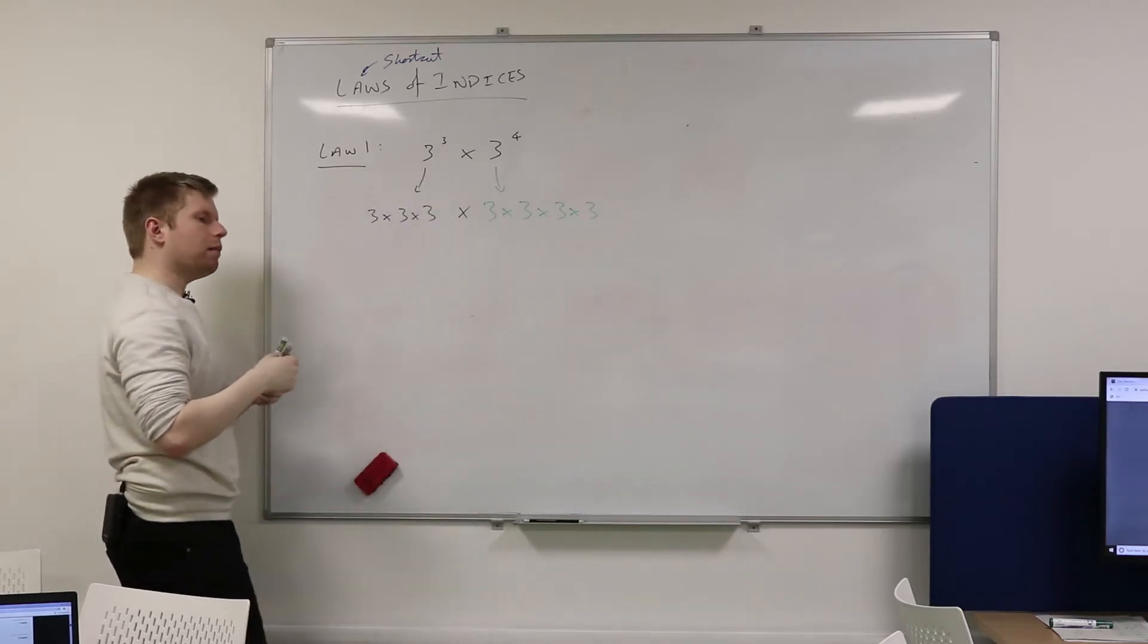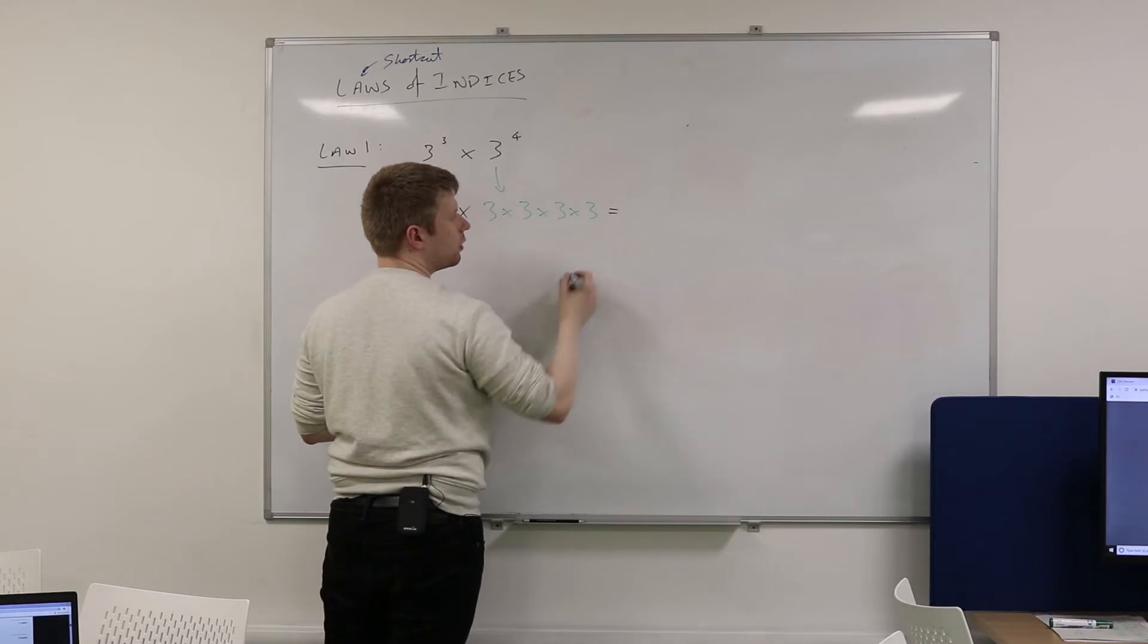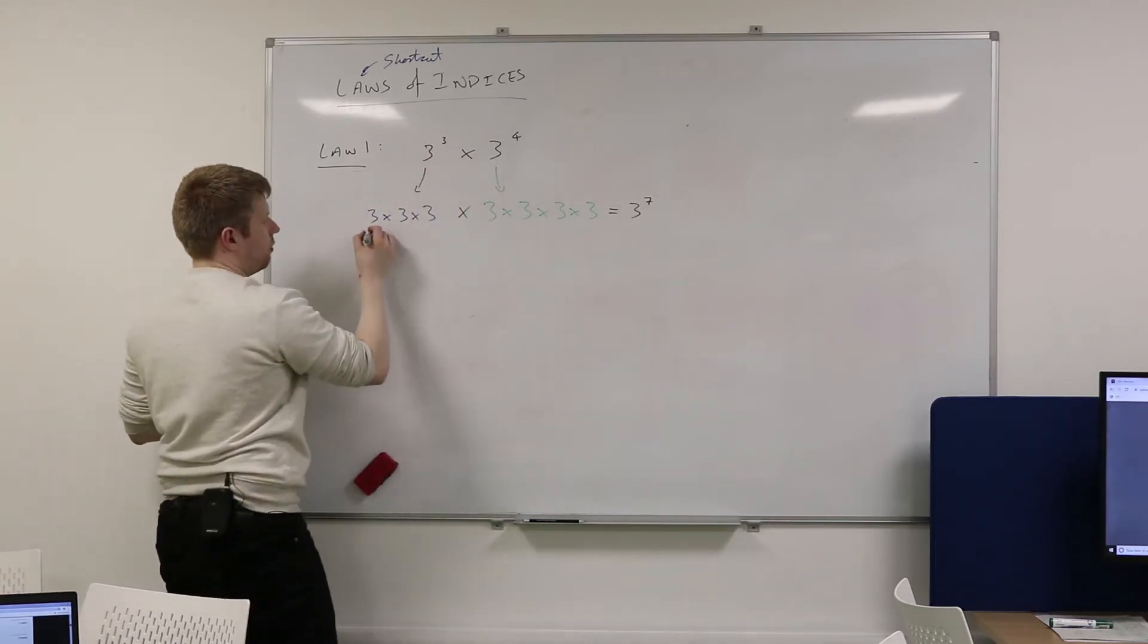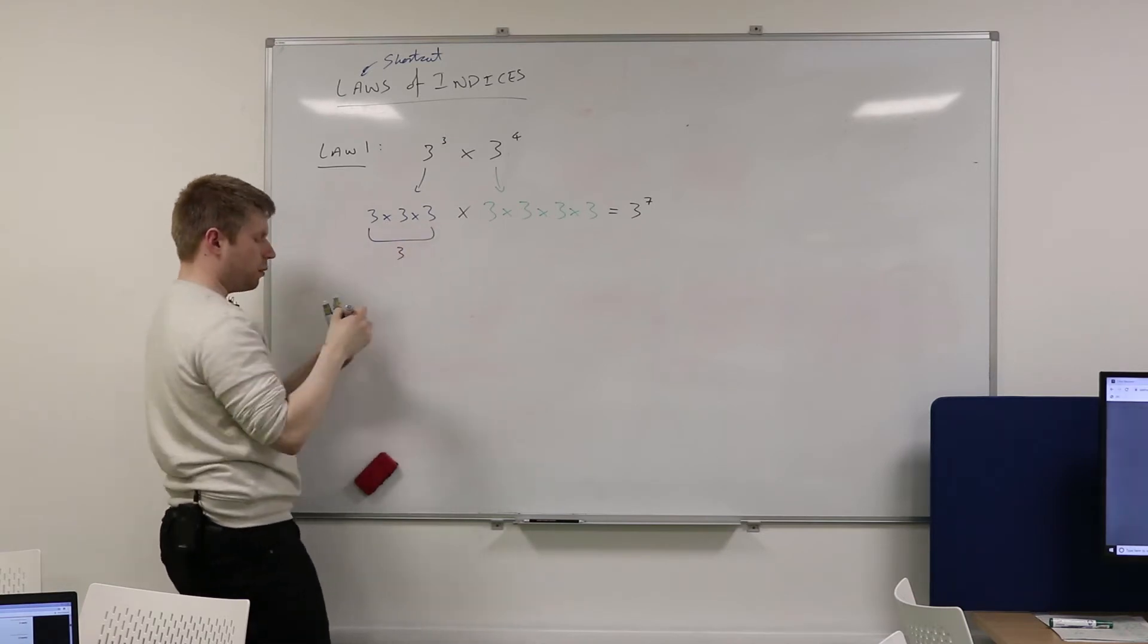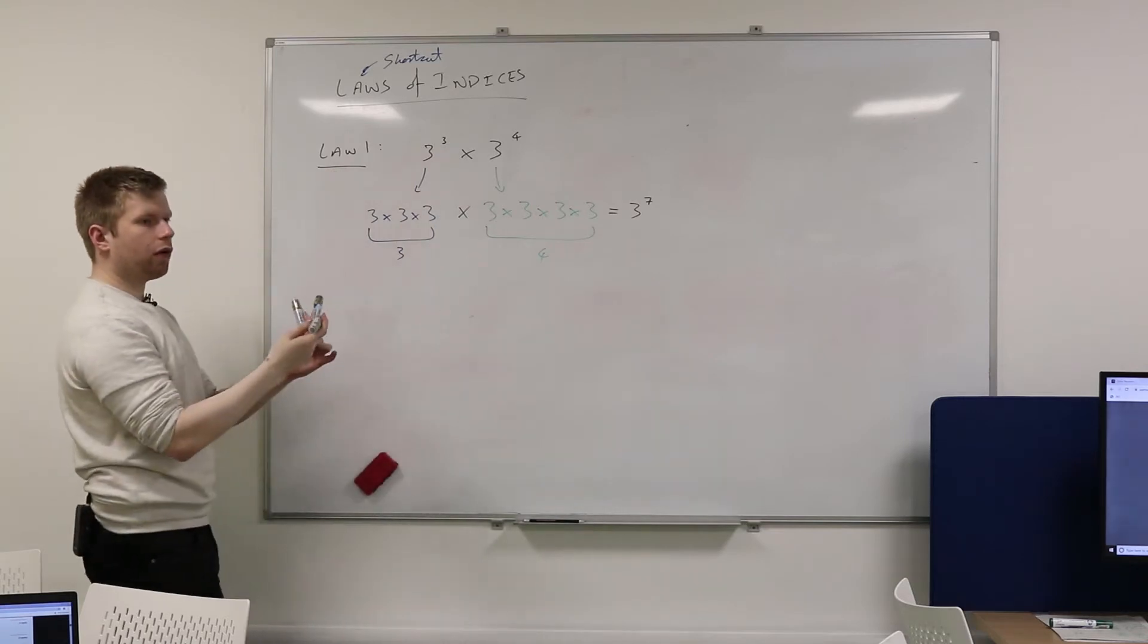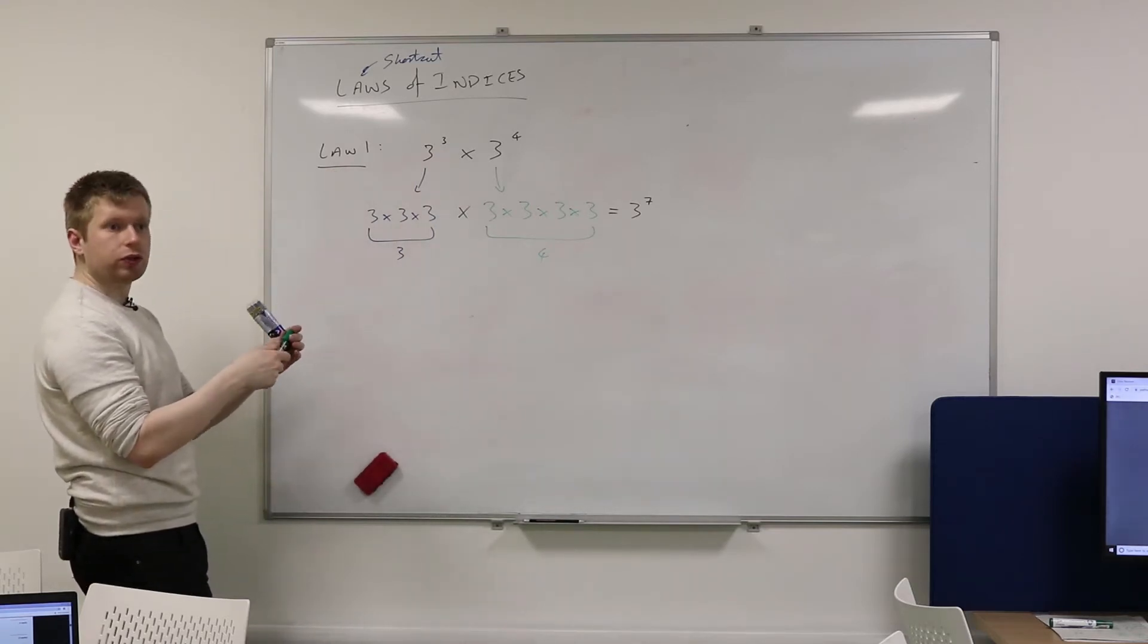So how many times am I multiplying 3 by itself? 7. And you're happy, why? Because you start off with three 3's over here. So there's three of them over here. And then there's four of them over here. So together, there are 3+4 or 7.